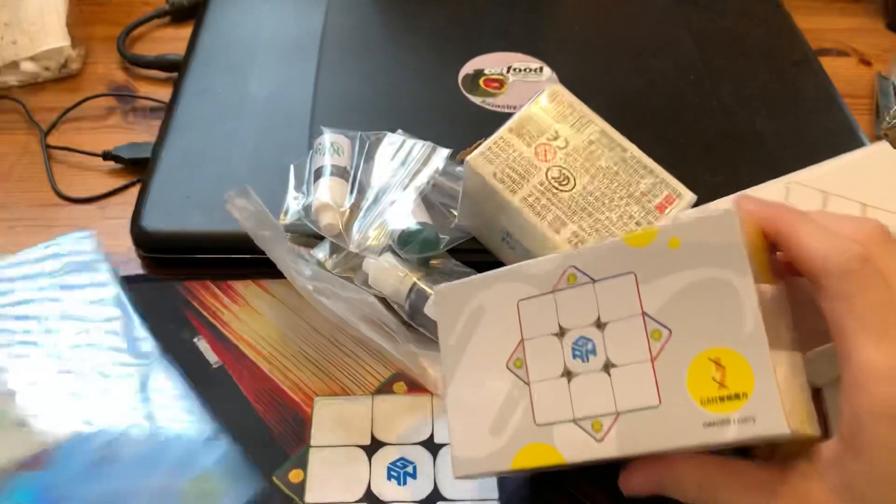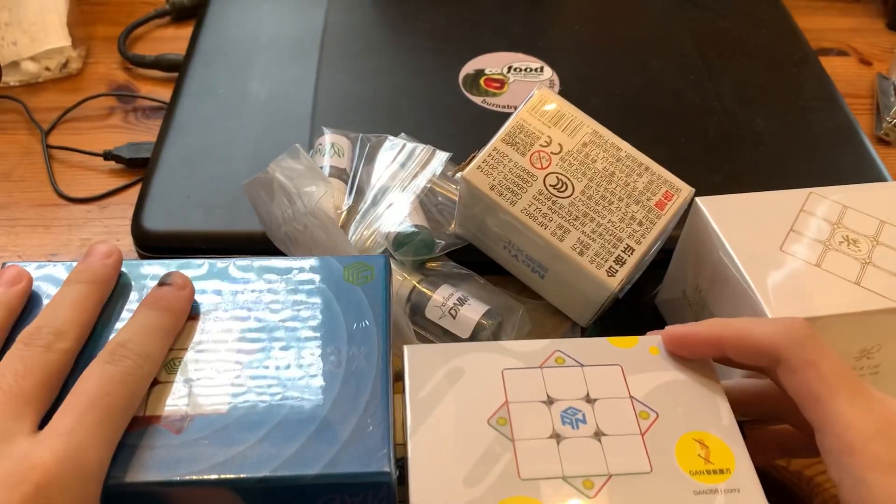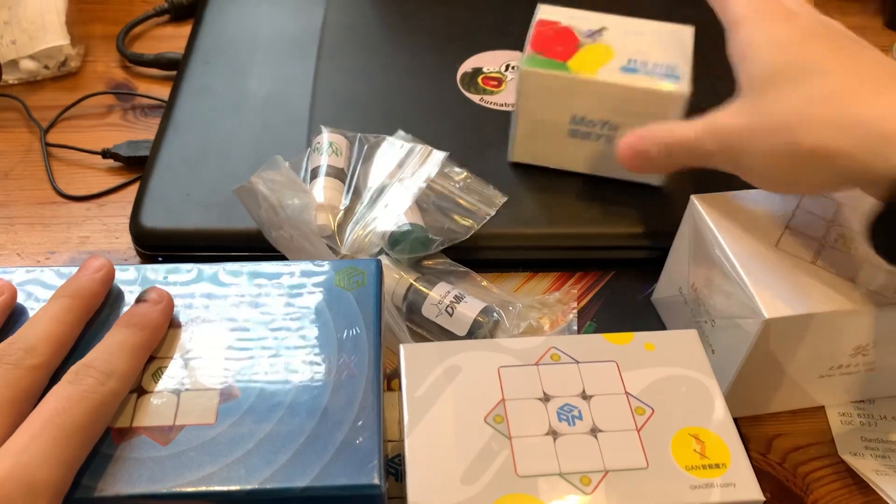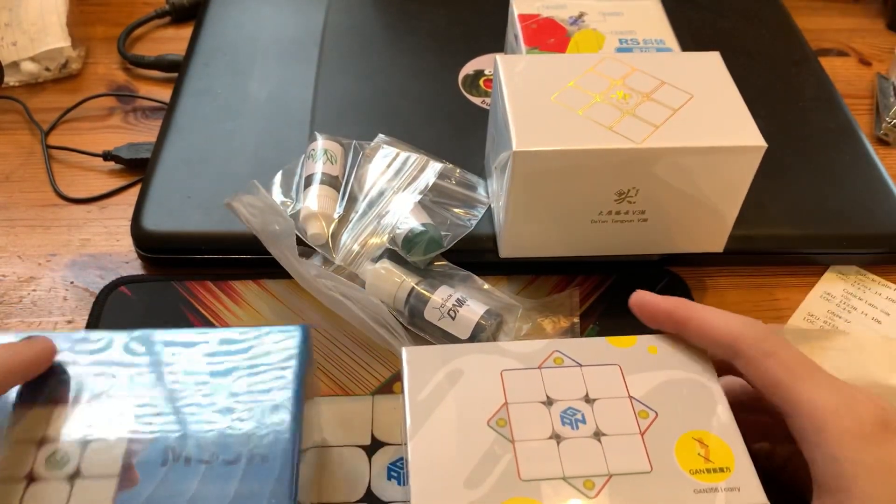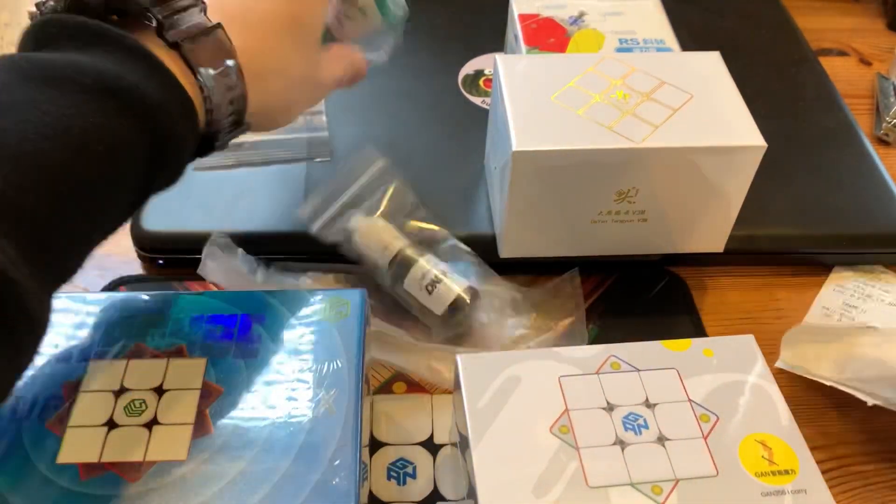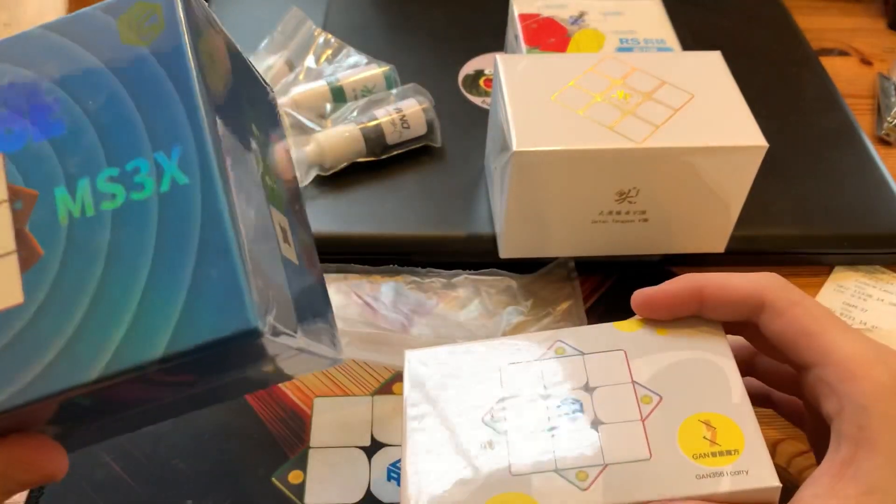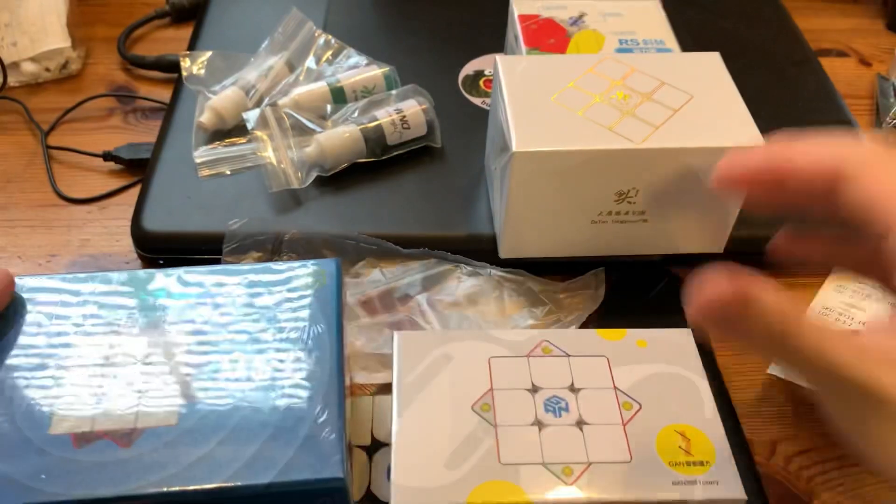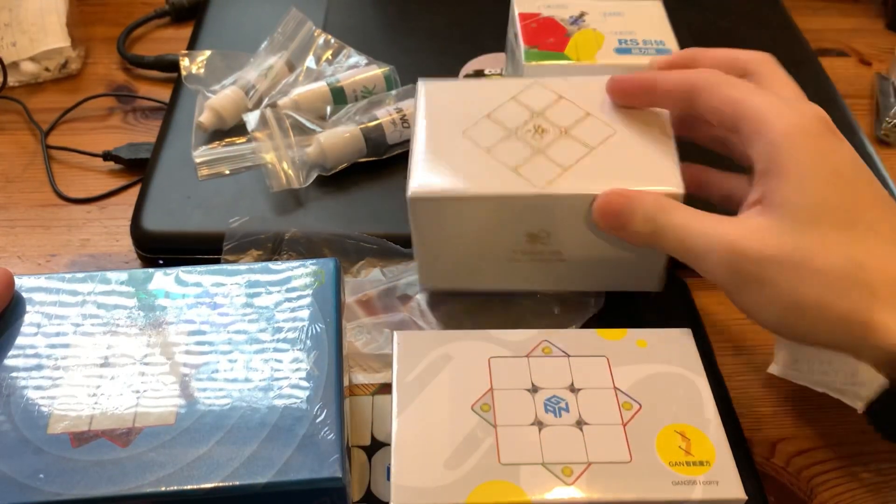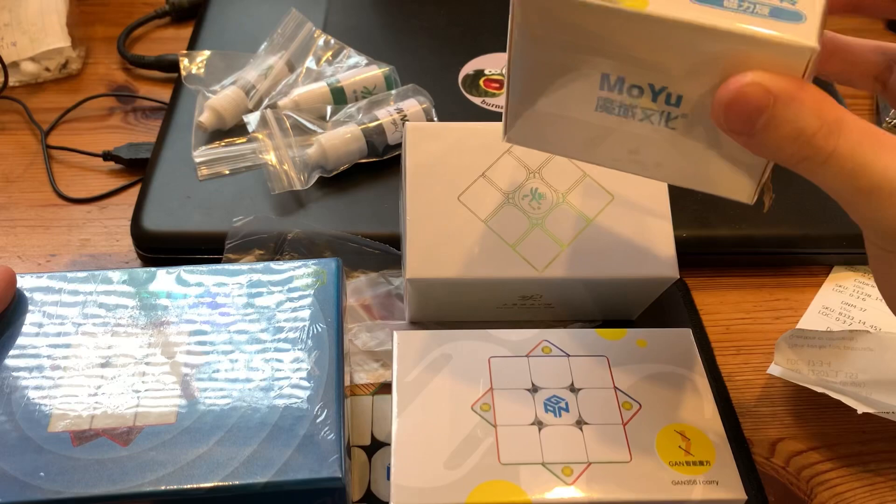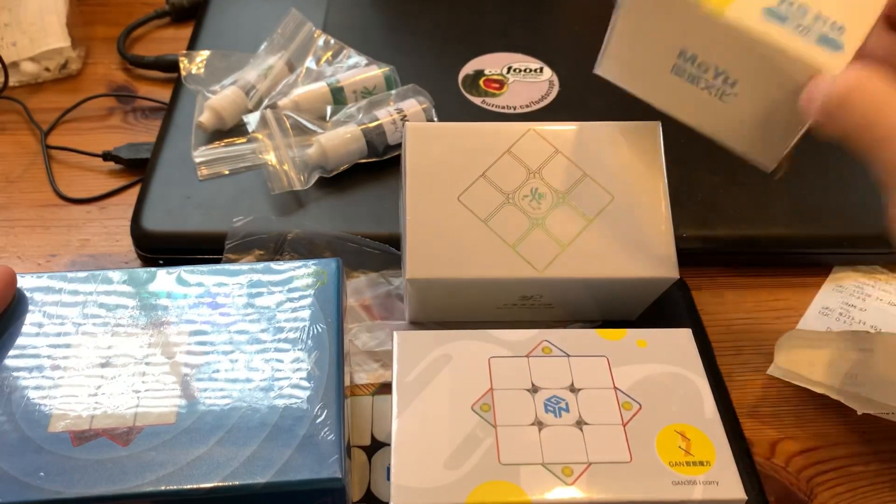Now what have we got? MS cube MS3X. People don't like it but I got it because I always like MS cubes, they're just special for me, I just like them, they're just good. Now what are the cubes? GAN i Carry, MS cube MS3X, Dian Sheng V3M RS, MoYu RS Skewb.